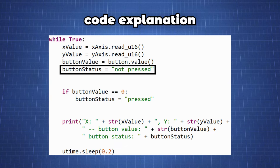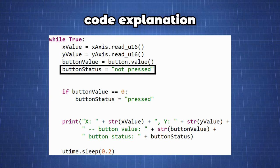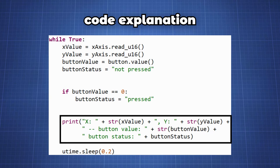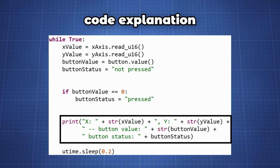A variable button_status is set to the current status of the button which will be not pressed. We can then create an if condition to check if the button value changes from high to low and then we can change the button status to pressed. Now let's print all the values we are reading to our shell and create a short delay to read the values easier.